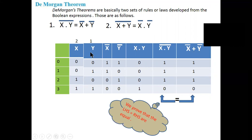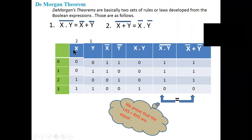Two variables: x and y. The possibilities are 0,0 — 0,1 — 1,0 — 1,1. First take x bar: complement of x gives 1,1,0,0. Likewise y bar: complement of y gives 1,0,1,0. Then x dot y is: 0·0=0, 0·1=0, 1·0=0, 1·1=1.